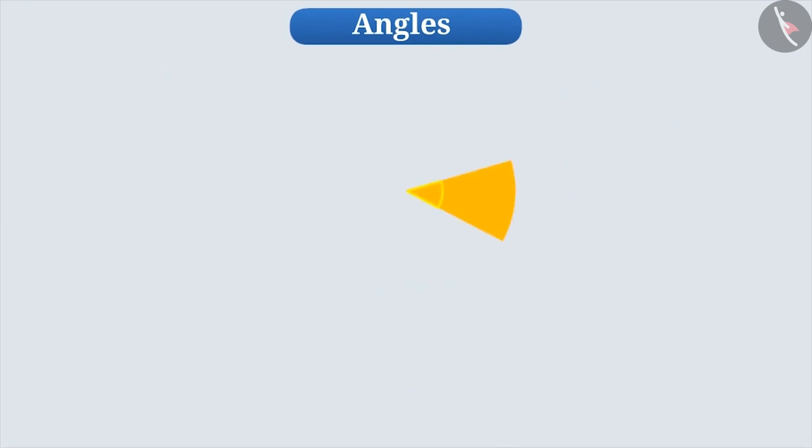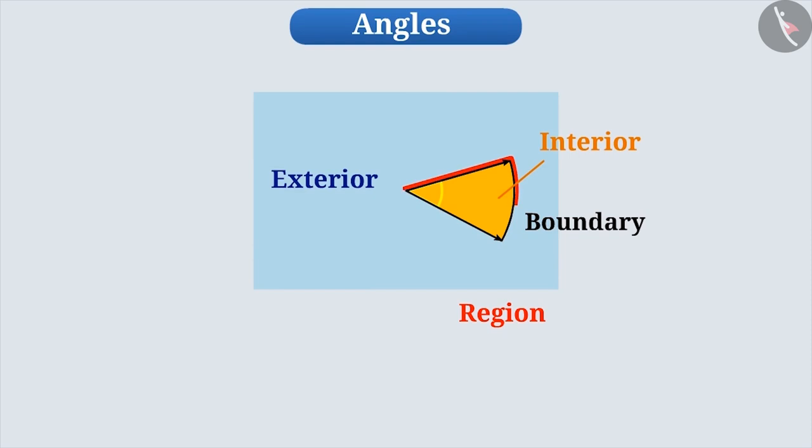There are three regions related to any angle. The part formed by the arms or the sides of the angles is called the boundary of the angle. The part inside the boundary of the angle is called the interior of the angle. And the part outside the boundary of the angles is called the exterior of the angle. The interior of the angle and its boundary together is called the region of the angle.